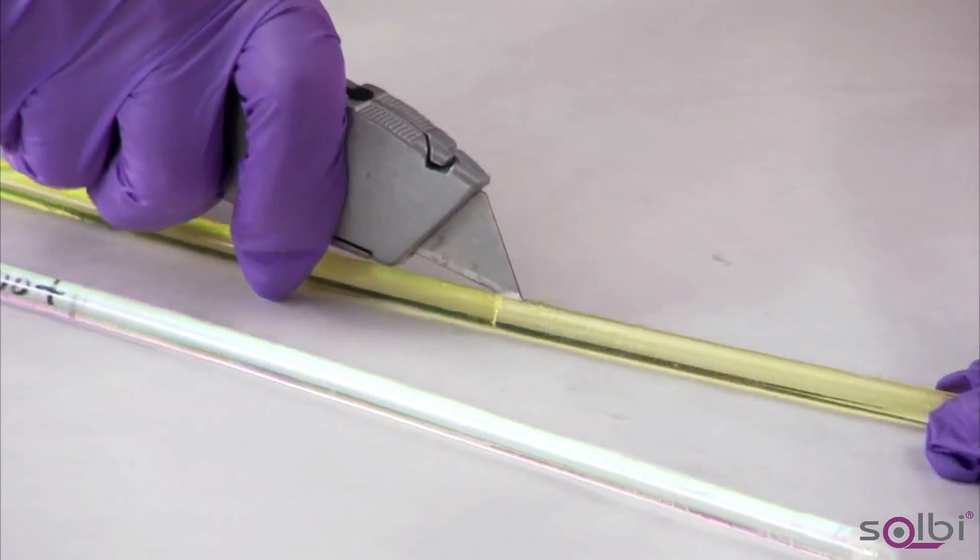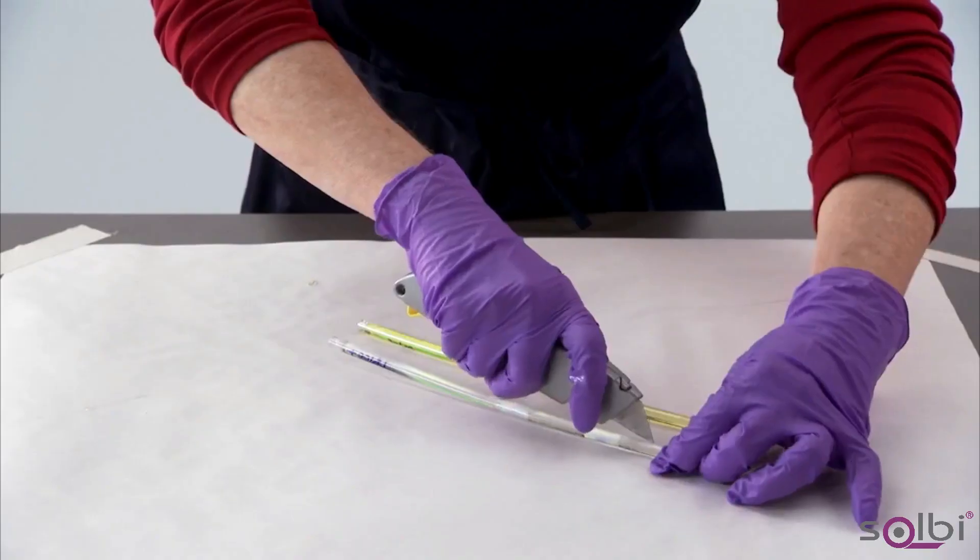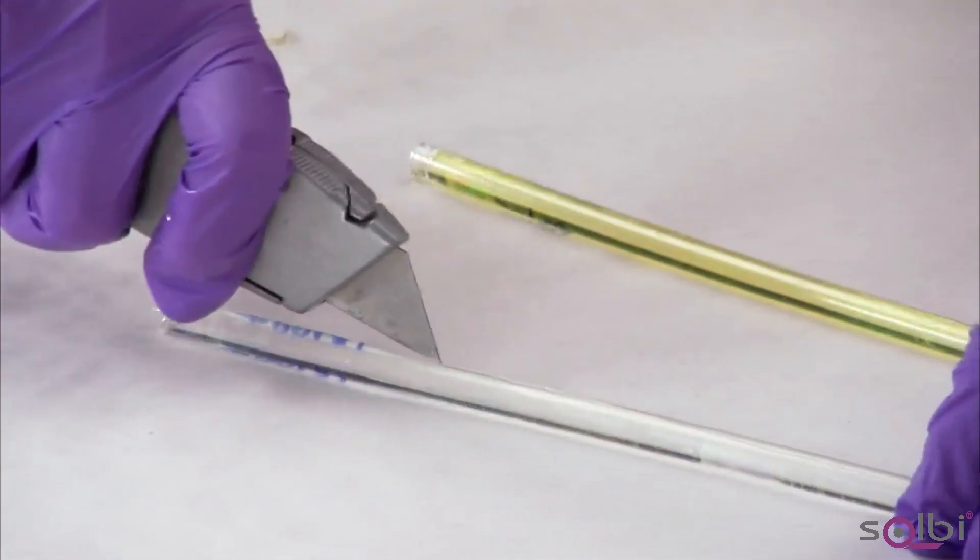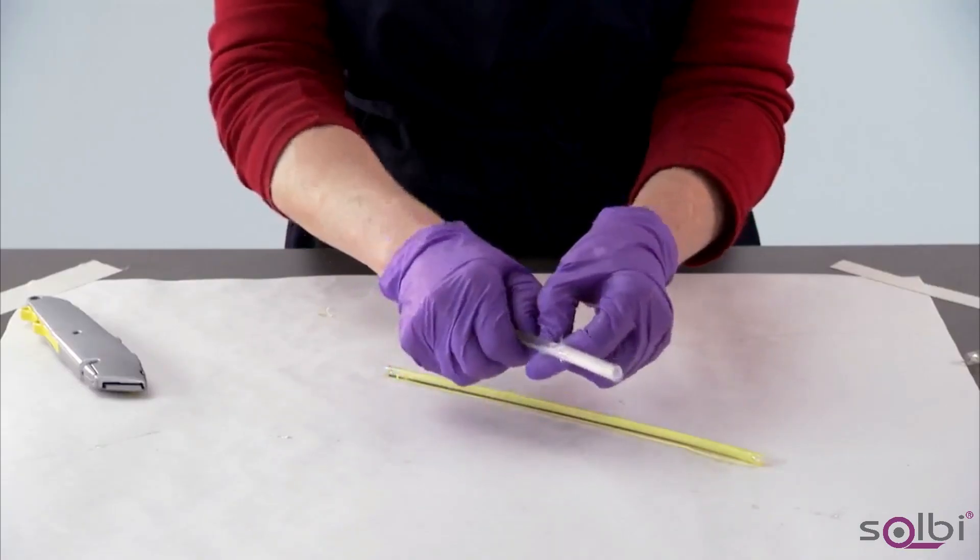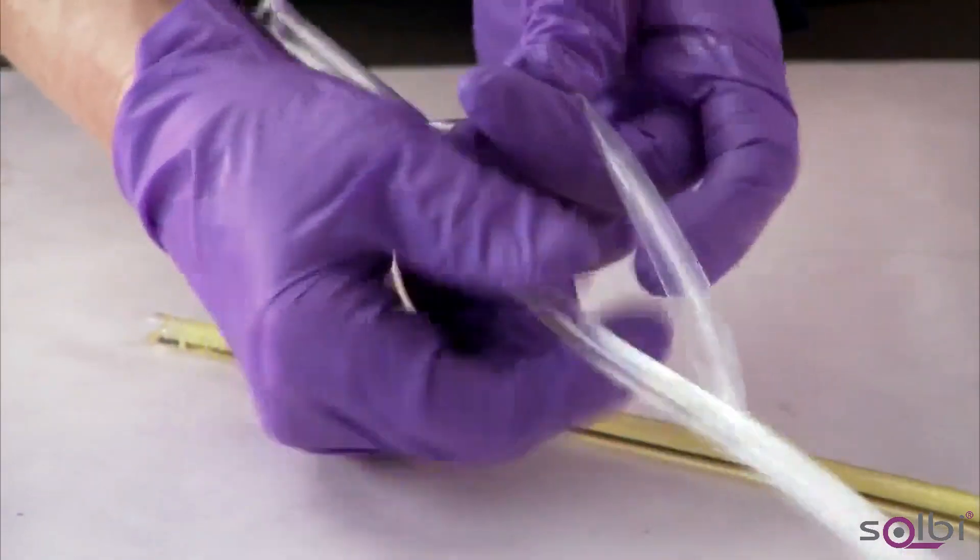After allowing the samples to cure for 24 hours, take a sharp blade and carefully cut through the top plastic layer of the straw from top to bottom. Split the straw at the cut. Slightly bending the straw will allow you to peel it off the hardened adhesive.